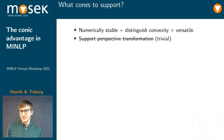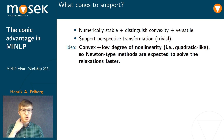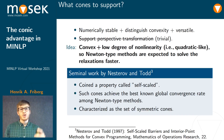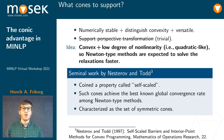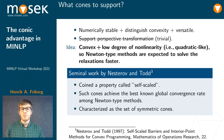One idea could be to look for convex cones with a low degree of nonlinearity, maybe even quadratic-like, so that Newton-type methods are expected to solve the relaxations faster. If you like this idea, you're going to love the seminal work by Nesterov and Todd. They coined a property called self-scaled, which does exactly what we wanted to achieve. Self-scaled cones achieve the best-known global convergence rate among Newton-type methods.